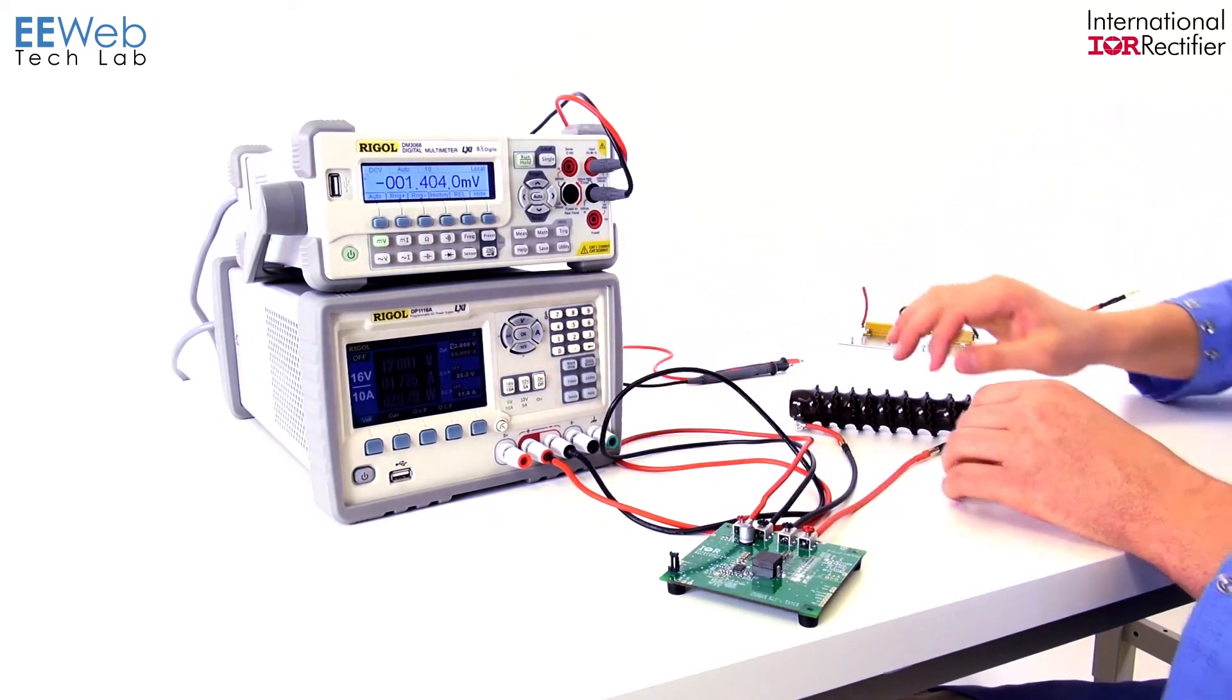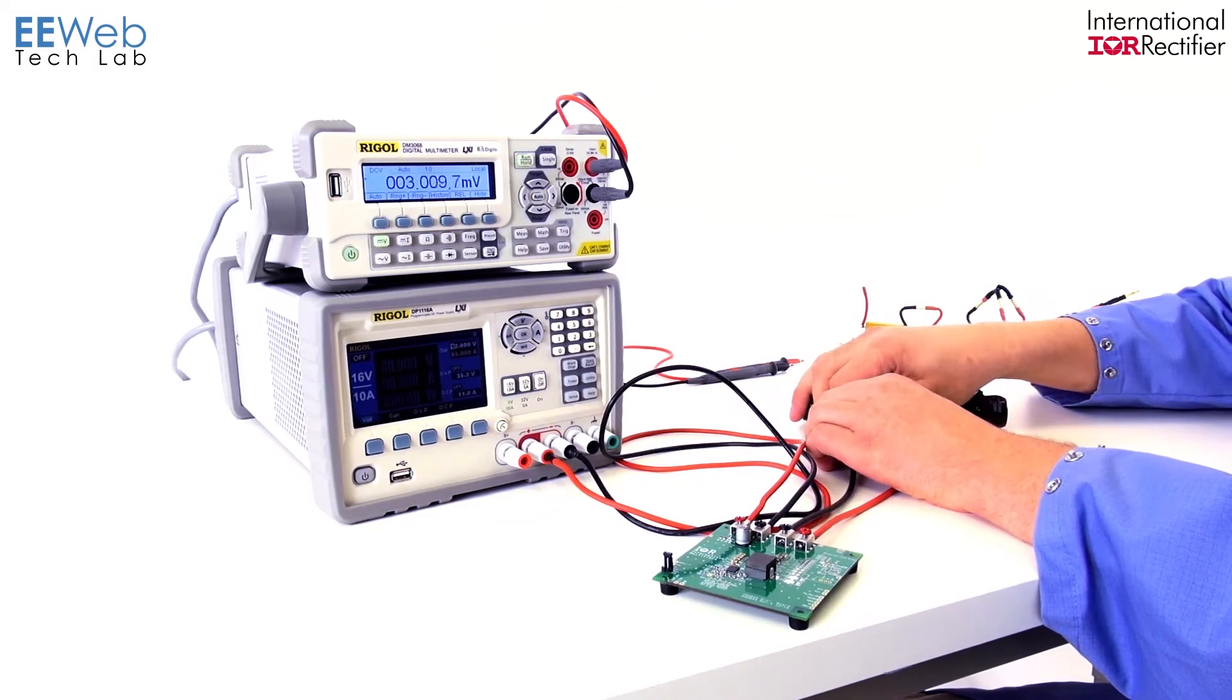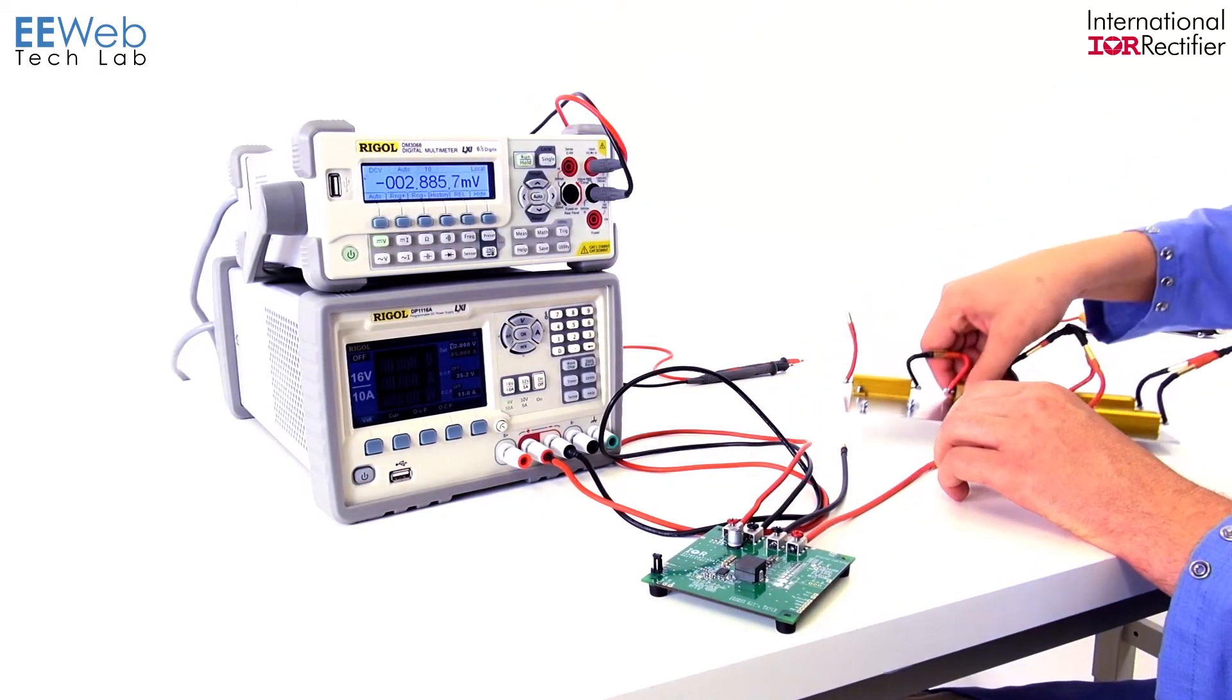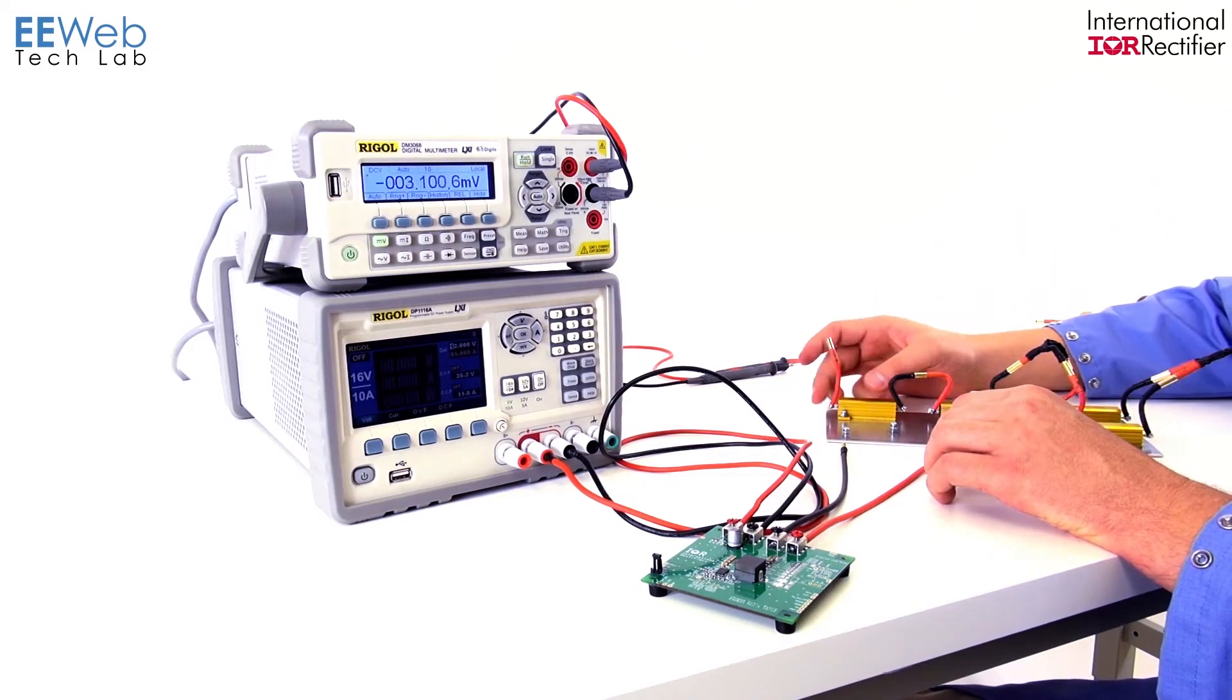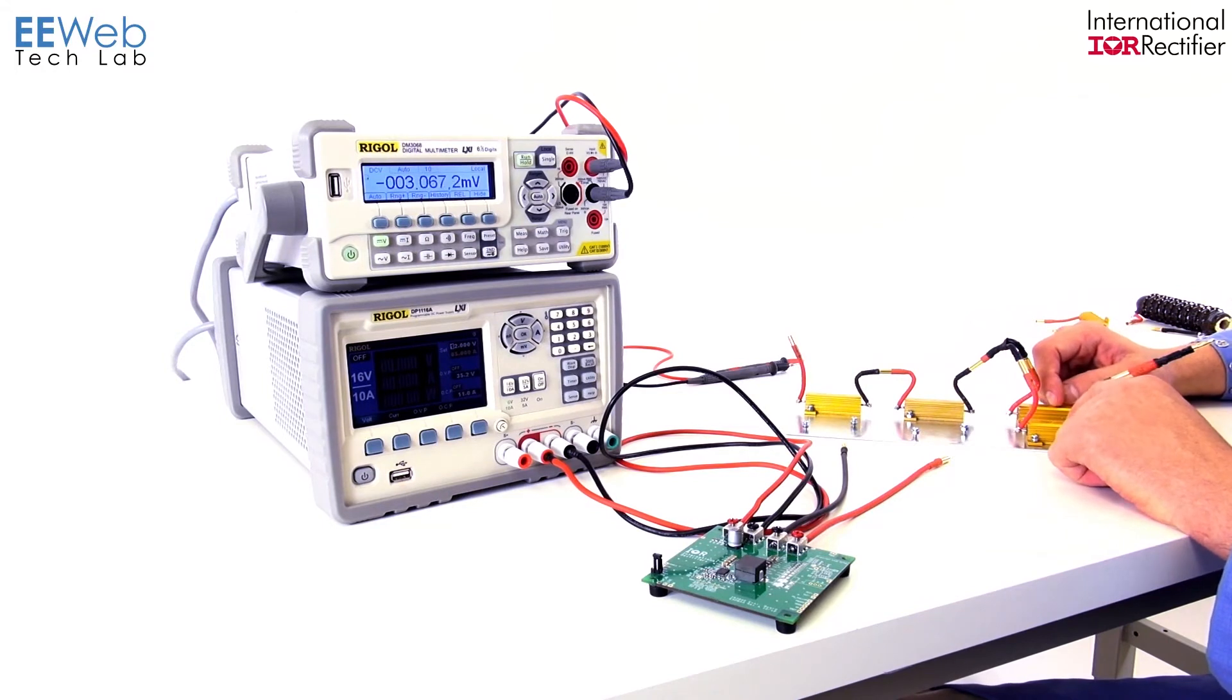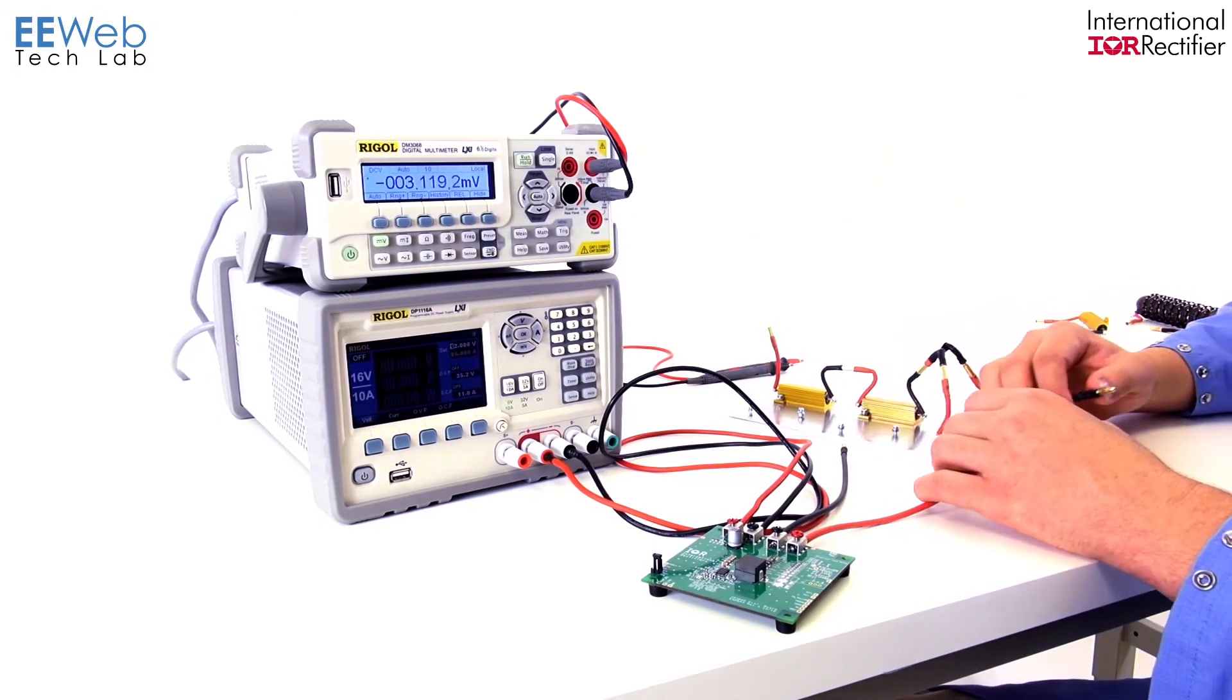So this last one should put us pretty close to 35 amps. We have a 0.01 in series with a 0.02 with two 0.01s in parallel. That should give us about 0.035 ohms.